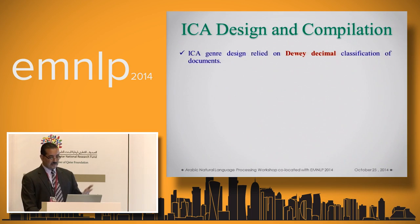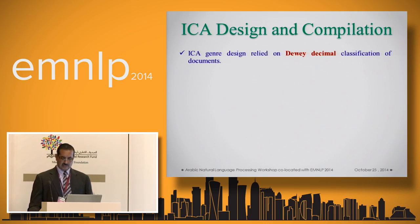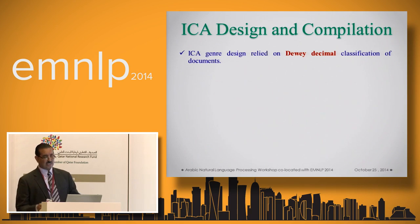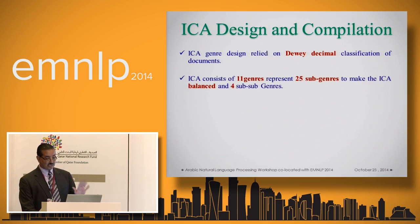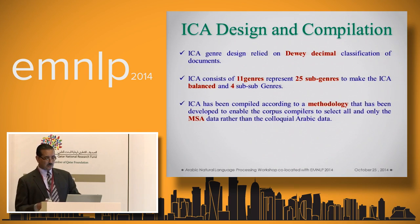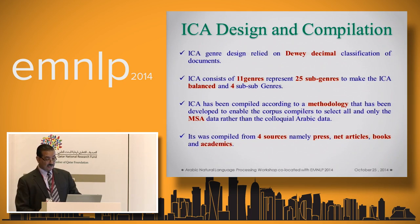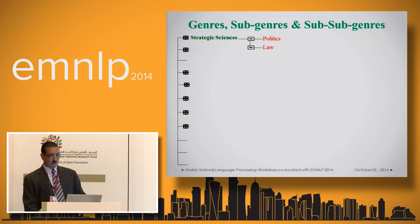For compilation, we combined the corpus and for the design and classification of the data, we adopted the Dewey Decimal Classification, which is one of the classification criteria used for classifying books in library science. We adopted this for classification and selected about 11 genres representing 25 sub-genres covering the Arabic language in general. We adopted a methodology that prevents colloquial Arabic from interfering with our text. We used four main sources: press, net articles, books, and academia.